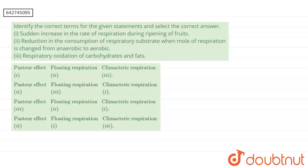Our question says: identify the correct terms for the given statements and select the correct answer. The first statement is the sudden increase in the rate of respiration during fruit ripening. The second is the reduction in the consumption of respiratory substrate when the mode of respiration is changed from anaerobic to aerobic. The third is the respiratory oxidation of carbohydrates and fats.